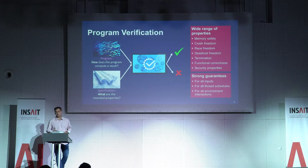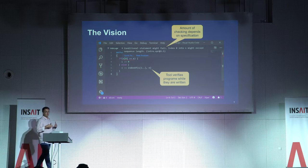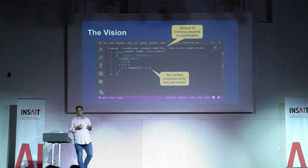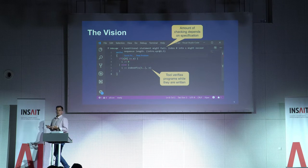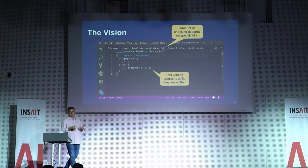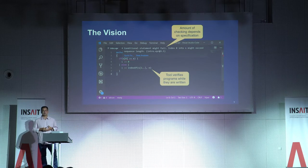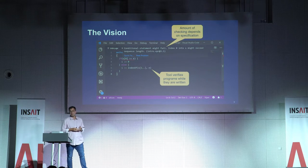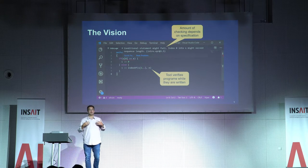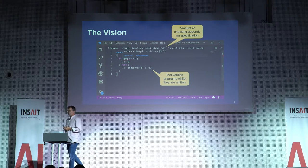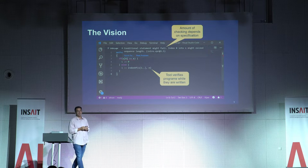In this demo you saw the vision behind this kind of program verification: a tool that looks over the shoulder of the programmer and tries to find errors while the programmer writes the program. The interaction is much like with a compiler — the compiler finds syntax and type errors, while the verifier finds much deeper semantic errors. The programmer has control over how much verification work is done by writing specifications: by default we check memory safety and crash freedom, and stronger properties are enabled by writing decreases or ensures clauses.